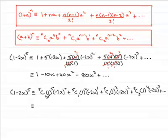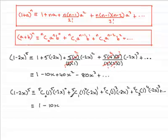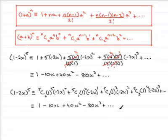5C0 — you can use your calculator to work this out — gives 1. 1 to the power 5 is 1, and minus 2x to the power 0 is 1, so all of this is 1. On your calculator, 5C1 comes out at 5, so you get 5 times minus 2x, which is minus 10x. I'll leave it up to you to try out these last two terms on your calculator, and you should find that you get 40x² and minus 80x³, plus and so on. Hopefully you've been able to follow my methods here, and that brings us to the end of the first part of this question.